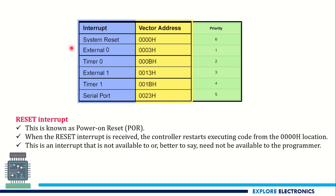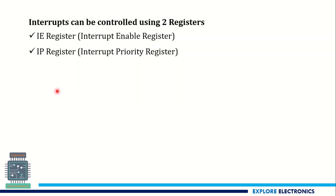We can control the external, timer, and serial port interrupts. The reset interrupt occurs on the hardware side and is also called a power-on reset, with a vector address of 0H. These five interrupts can be controlled using two registers: the IE register (Interrupt Enable Register) and the IP register (Interrupt Priority Register). The IE register is used for enabling and disabling interrupts, and the IP register is used to set interrupt priorities.